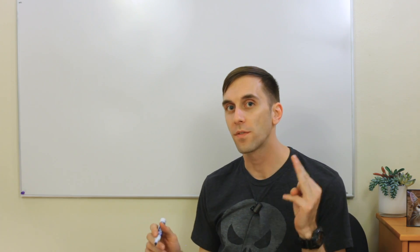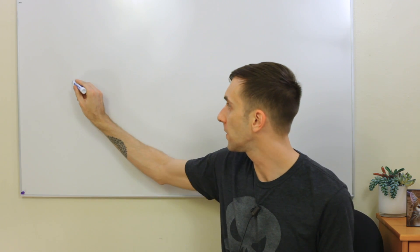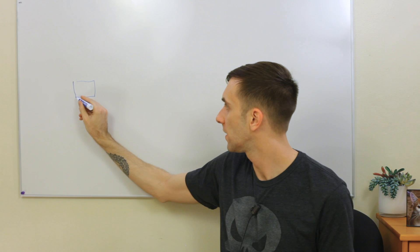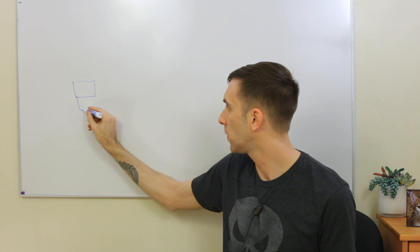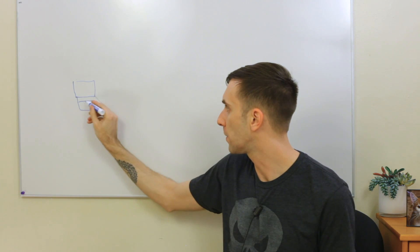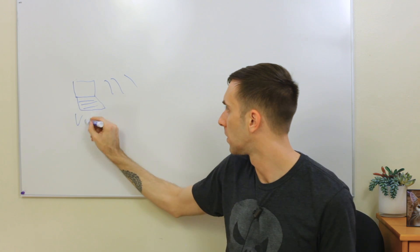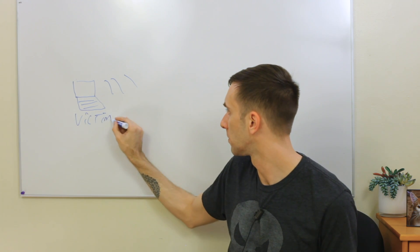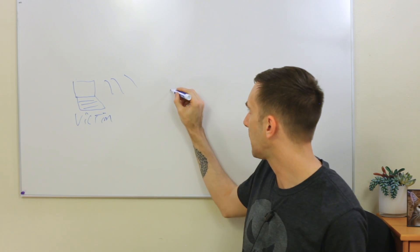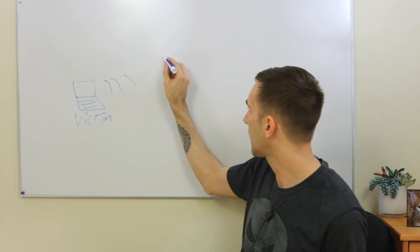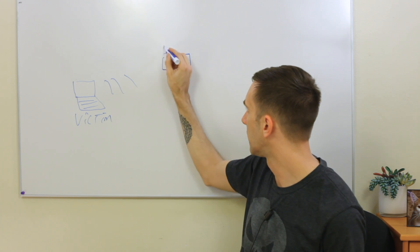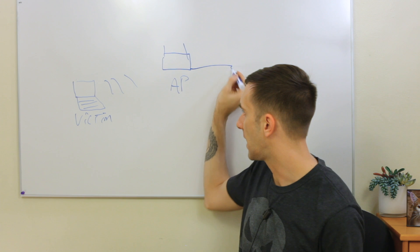We'll also cover how to defend against it. An evil twin attack is dependent on having three different factors in play. The first is a target that is connected to a wireless network that we do not know the password to. This victim computer will be connected to an AP, and this AP will be the one connected to the internet.